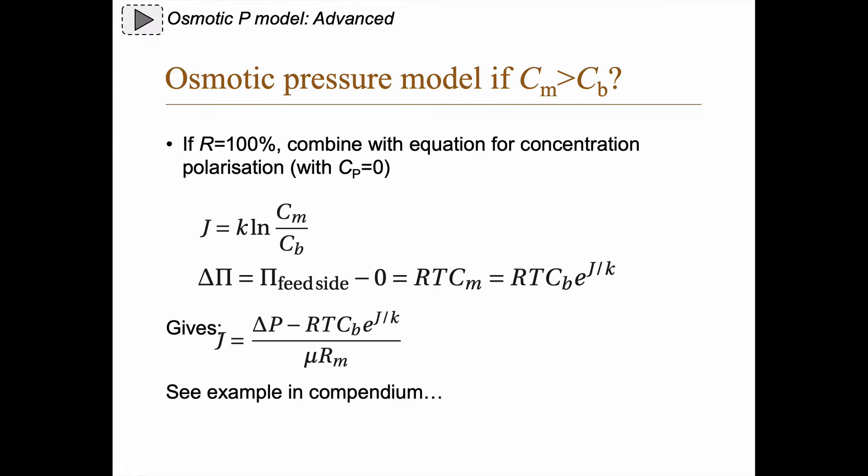Now we can put this into our equation, so J equals delta P minus RTC_b e to the power of J divided by k, and then divide it by viscosity and the membrane resistance. The problem with this equation is that we have J on both sides.